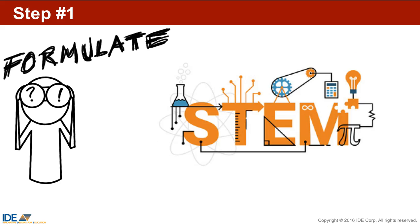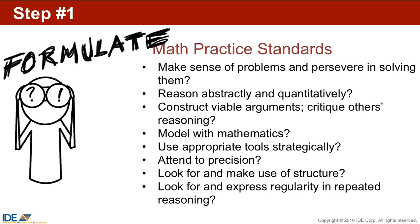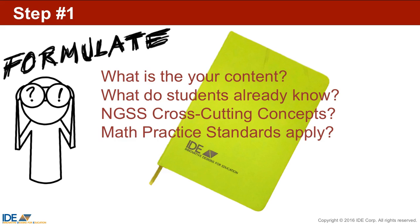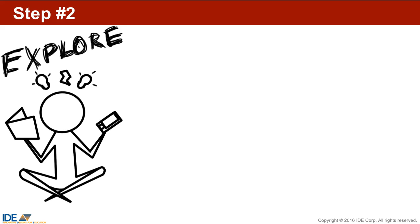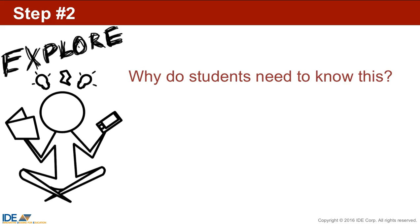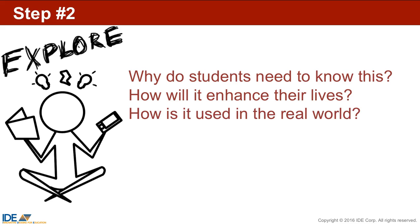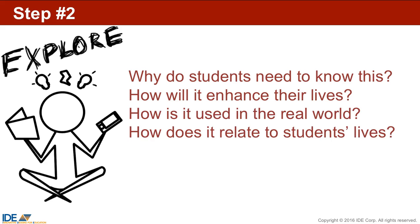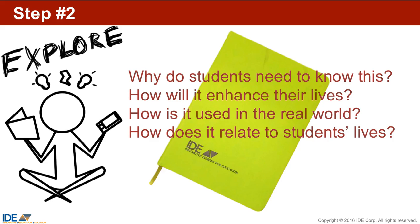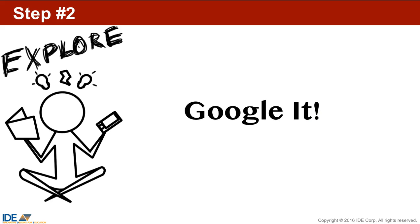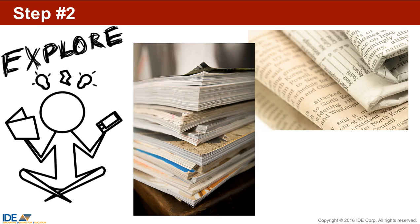If you're teaching in a STEM or STEAM school, do you see science or the scientific process within your content? And how about the math practice standards? These standards definitely cross curricular lines. Once you have sufficiently formulated your unit needs, step two is to explore your topic in terms of its real-world application. Why do students need to know this content? How will it enhance their lives? How is the content used in the real world? How does the content relate to students' lives? Write down your ideas in your design journal. To explore how your topic relates to the real world, just Google it or use an internet search engine of your choice. Look through newspapers and magazines — often you'll find that current events link to your content. Spend some time exploring until you jump to step three.